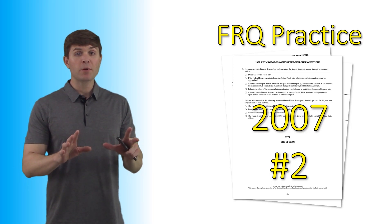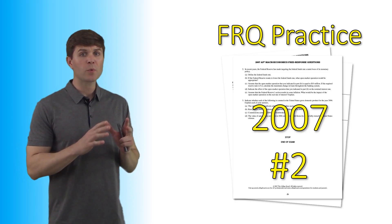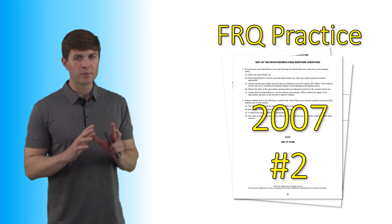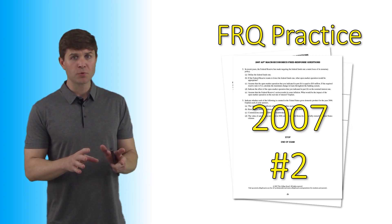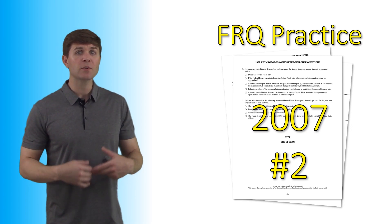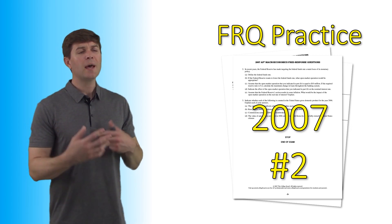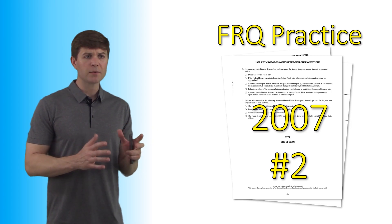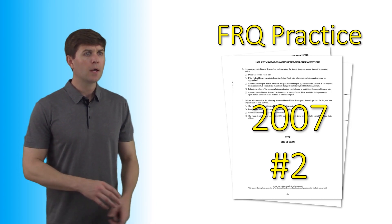Alright guys, let's do another FRQ question. This time we're doing one from the 2007 AP exam, the number two question. It deals with open market operations as well as some balance sheet type concepts.